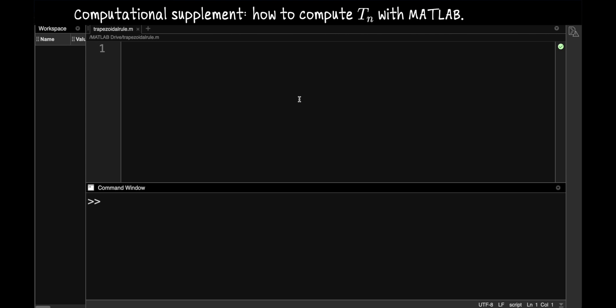Since the trapezoidal rule is a numerical estimation, I think it makes a lot of sense to use a numerical tool. So I'm going to take a few minutes to write a basic MATLAB script that will do the trapezoidal approximation for me for my choice of function, domain, and number of trapezoids.